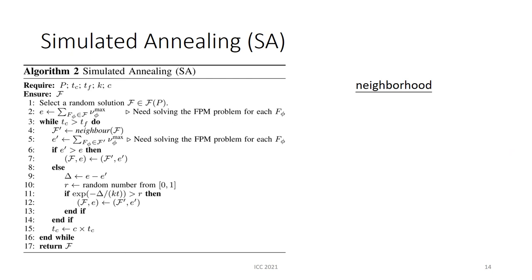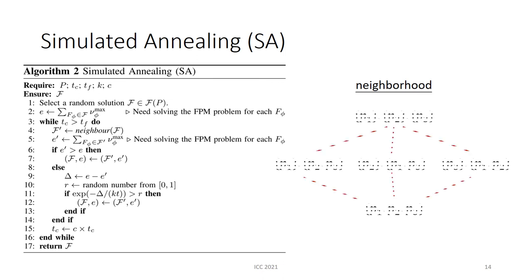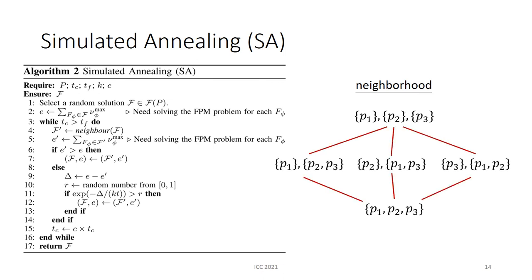The other approach is Simulated Annealing, or SA. We use standard SA, and the only design choice is the definition of neighborhood. We define two Federation structures as neighbors if one ESP changes his membership such that the Federation structure changes from one to the other.